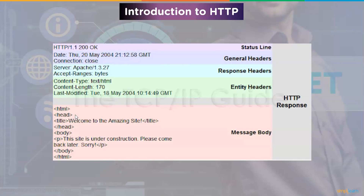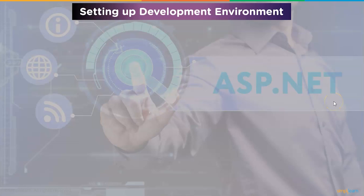An HTTP response is a server response providing the client with the requested resources. The response includes a status line containing the HTTP protocol version, status code, and reason phrase. One or more response header lines transmit additional information from the server to the client. The response body contains the resource that the client has requested. If the request fails, the response body specifies the cause of the failure and the steps the client must take to complete the request successfully.